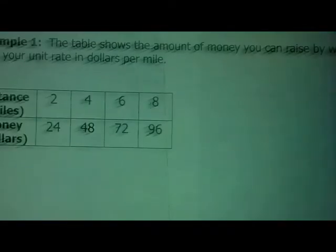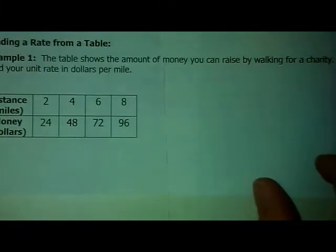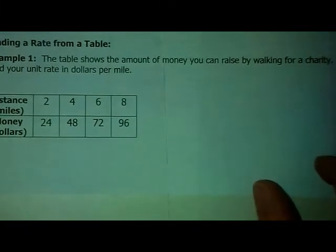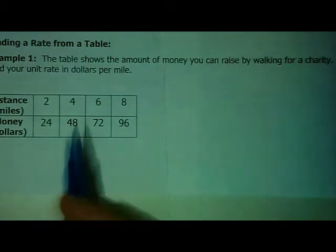Our agenda: we want to find a rate from a table. This table shows the amount of money you can make walking for a charity. Find your unit rate in dollars per mile.